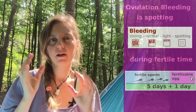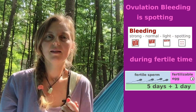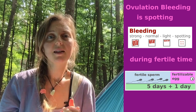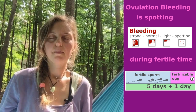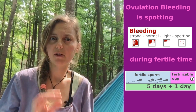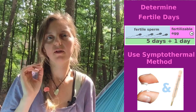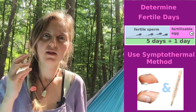What is an ovulation bleeding? An ovulation bleeding is a spotting, mostly brown or red in color, and mostly it occurs during your fertile time in your cycle. But how can you know if it is really your fertile days in your cycle?